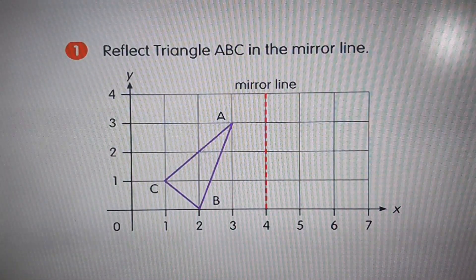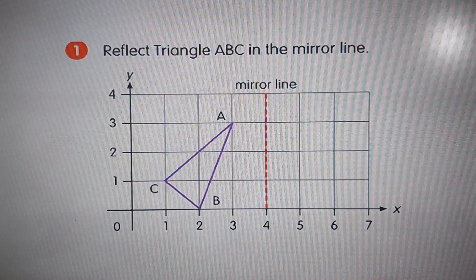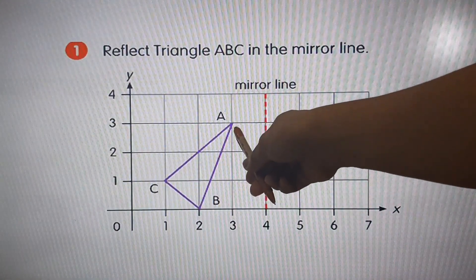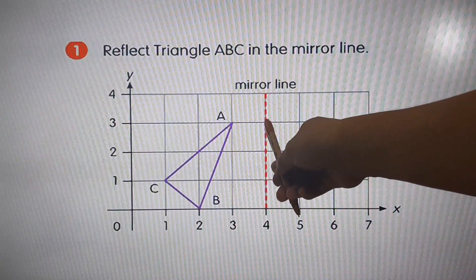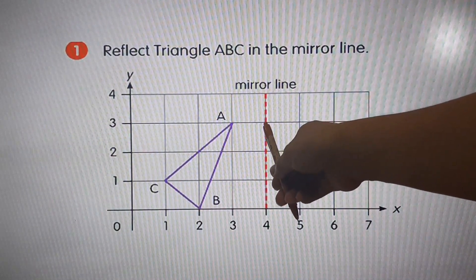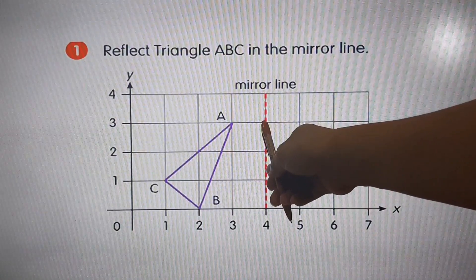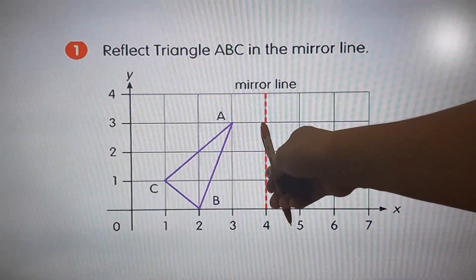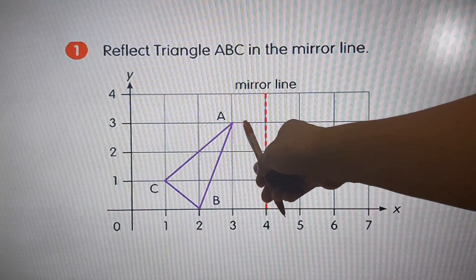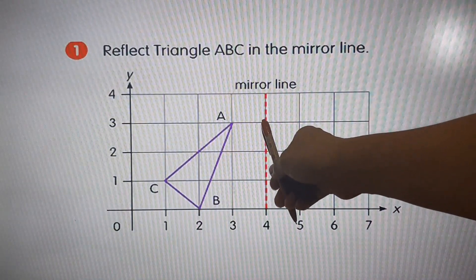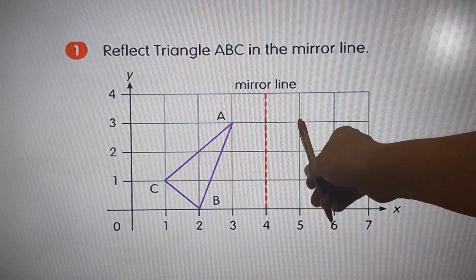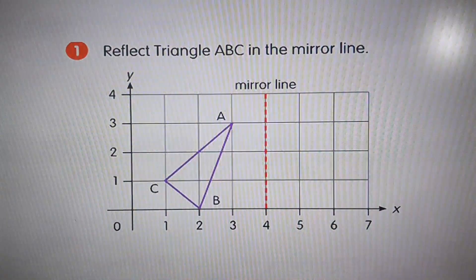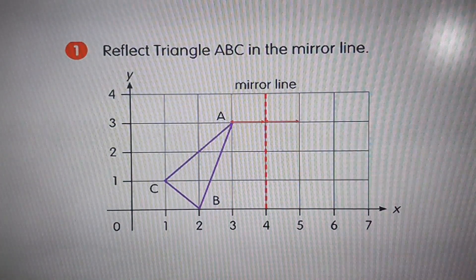First, you need to count the number of squares from point A to the mirror line, and then count the same number of squares on the opposite side of the mirror line. So, if there is one square from A to the mirror line, so from the mirror line to this side, there should be only one square. So, expected the point will be there.